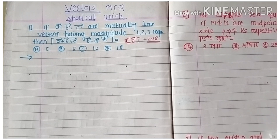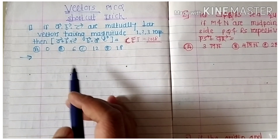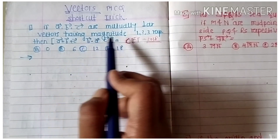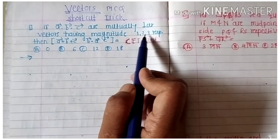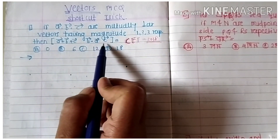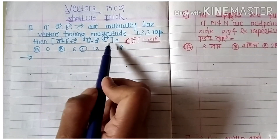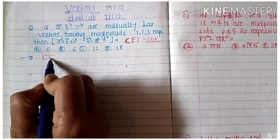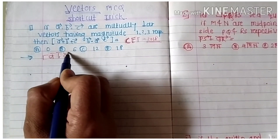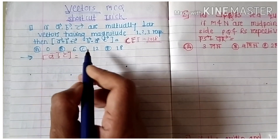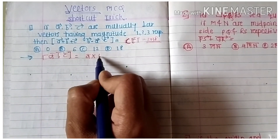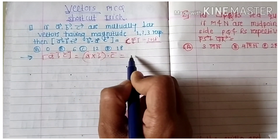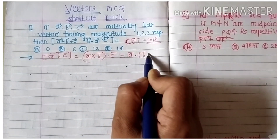Some MCQs on vectors using shortcut tricks. Here we have three vectors that are mutually perpendicular, having magnitudes 1, 2, 3 respectively. We have to find the scalar triple product of three vectors — that is, if ā, b̄, c̄ are the vectors, we know it is equivalent to ā × b̄ · c̄, or ā · b̄ × c̄.